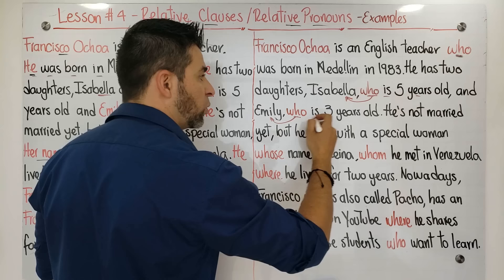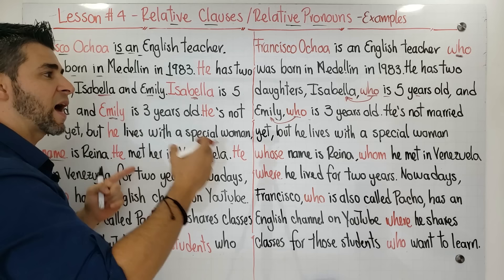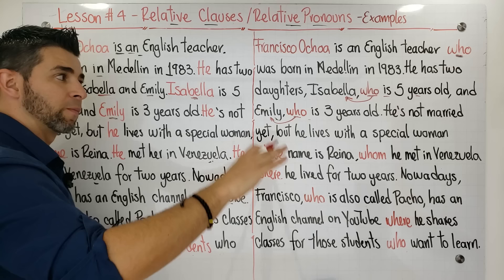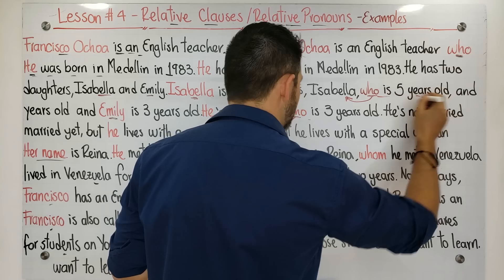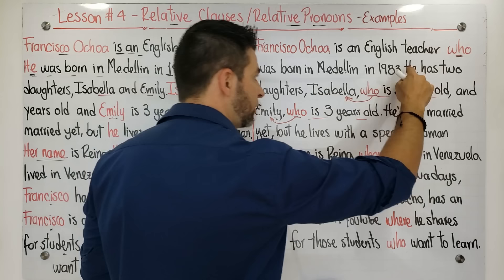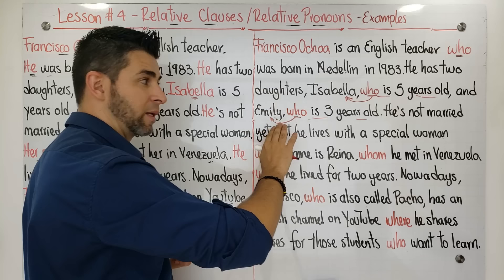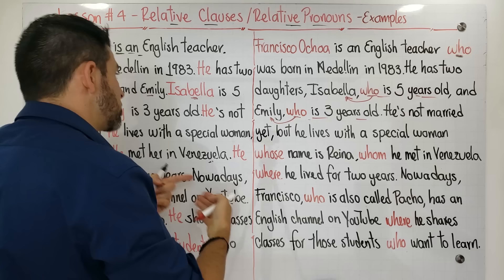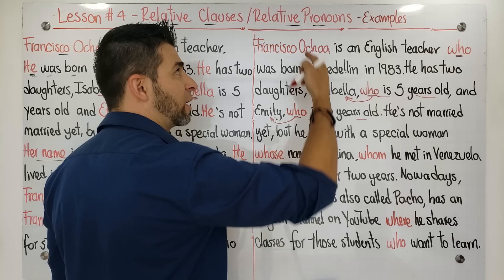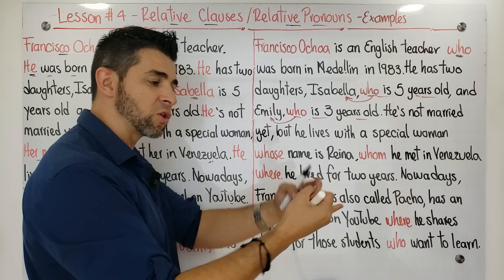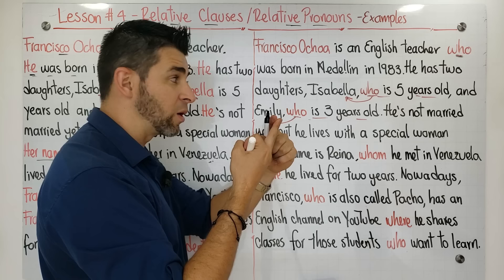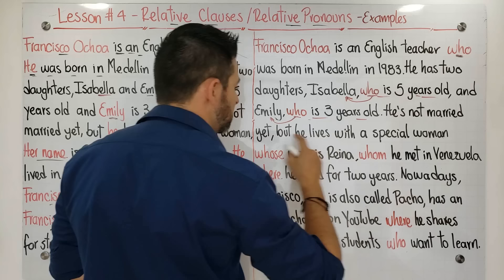'Who is five years old' and 'who is three years old' — this is additional information from the text and it does not affect the rest of the sentence. For example, if we remove these parts, the sentence still makes sense: 'He has two daughters, Isabela and Emily' — you can skip 'who is three years old' and it still works. This is additional information. Remember: relative pronouns give additional information, replace a subject, and connect two or more independent clauses.